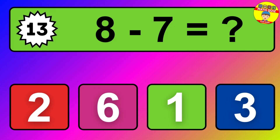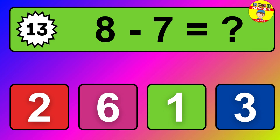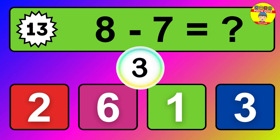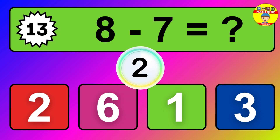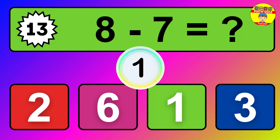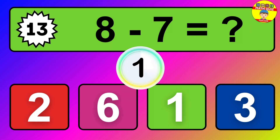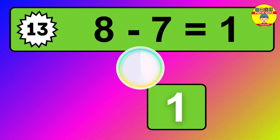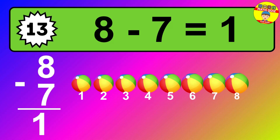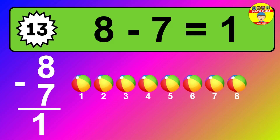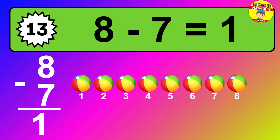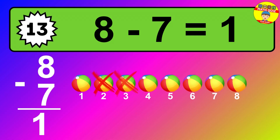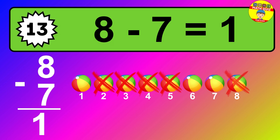Question thirteen: eight minus seven equals what? So the answer is eight minus seven is one. Let's count it: one.